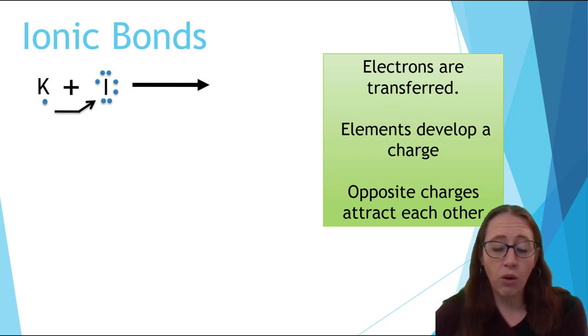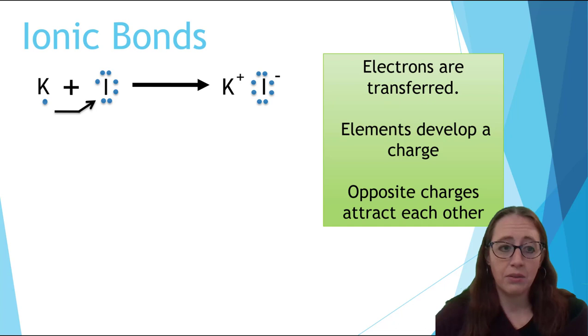What do you think it is that holds the potassium and the iodine together after the trade of electrons? Well, this would be the positive and the negative charge.